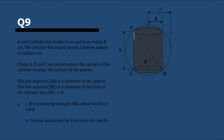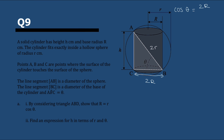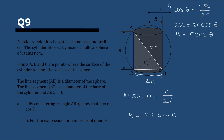Next up, Question 9. Considering triangle ACB, they're asking for an expression of h in terms of r and θ. The hypotenuse is 2r (the diameter), and the base is 2R (twice the radius of the base). So cos θ = 2R / 2r, giving R = r cos θ. For h, sin θ = h / 2r, so h = 2r sin θ.